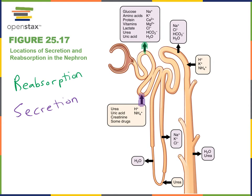Moving into the loop of Henle, at the descending limb we see water reabsorption. In the loop of Henle we also see secretion of urea, the nitrogenous waste. Moving up the ascending limb of the loop of Henle, we see reabsorption of sodium chloride as well as potassium.